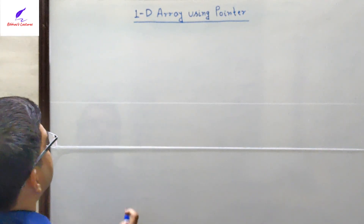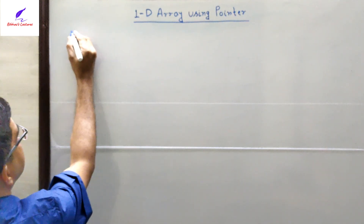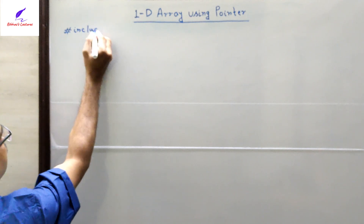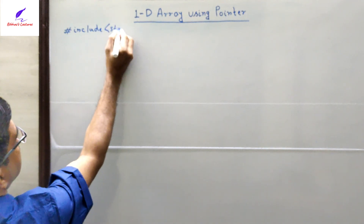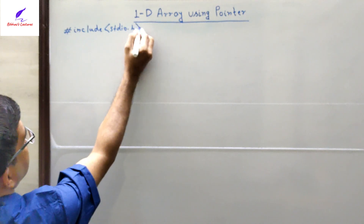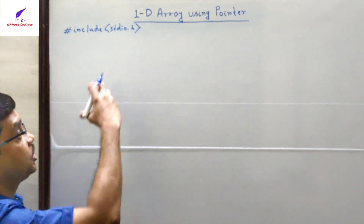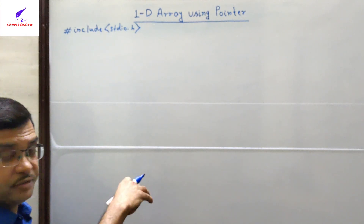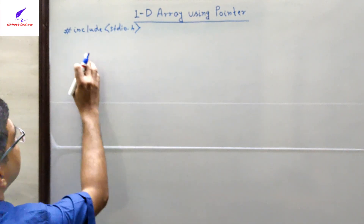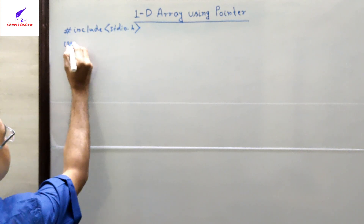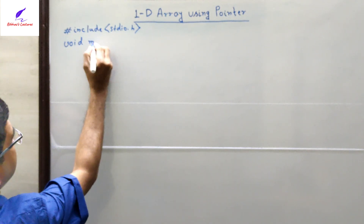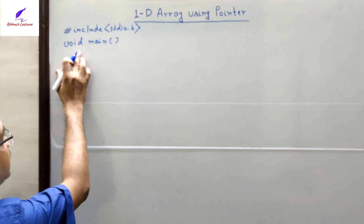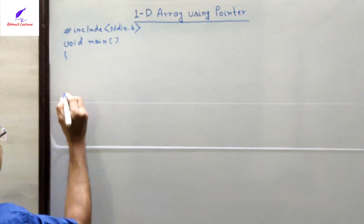First we will include the header file: #include stdio.h. I have already discussed the function of this header file and why it needs to be included in the program — please check the previous video. Then we will start the main function: void main.